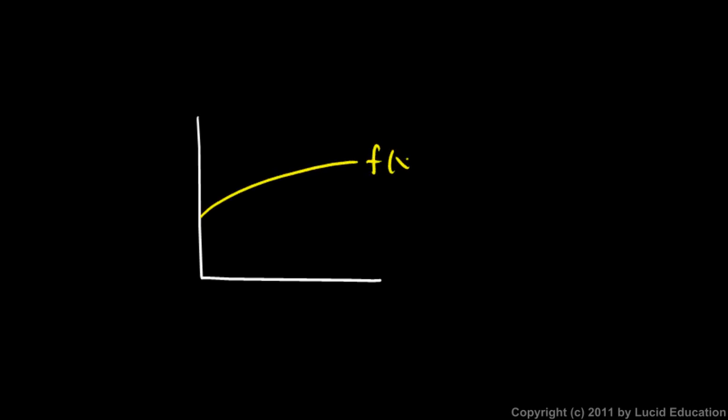So something like this: you have some function f, and if you imagine a line here at some x value, and x is increasing, so this line is moving to the right, and as it moves to the right it sweeps out some area under this graph. We'll call that area A, and the area under f from 0 to x is given by the antiderivative of this original function f.